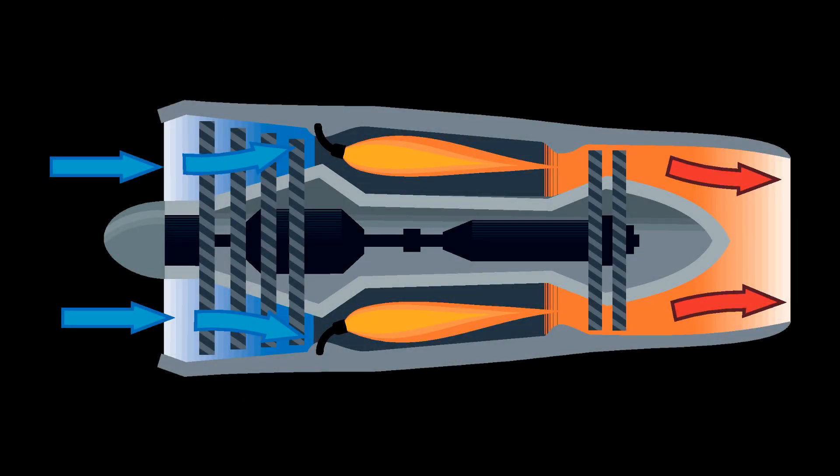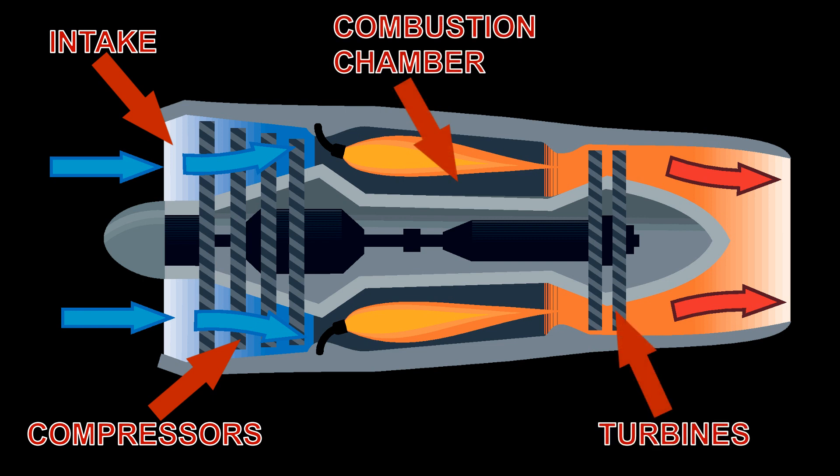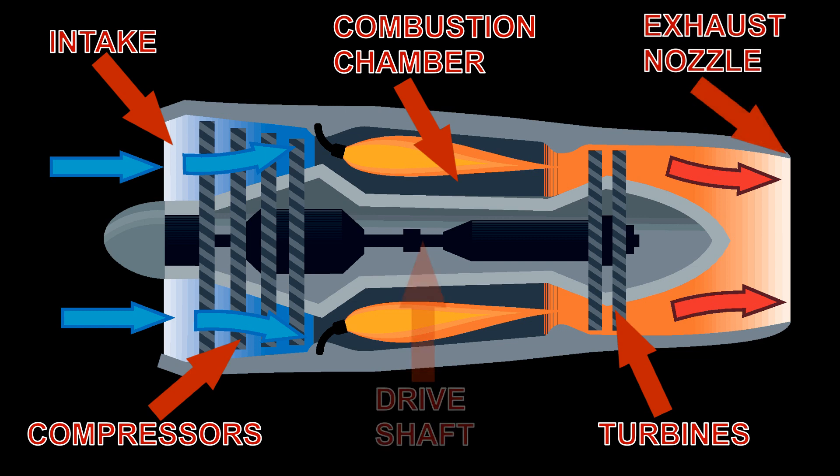Now let's look at the inside of a jet engine and describe how it works. There are various stages of a jet engine. These are the intake, the compressors, the combustion chambers, the turbines, the exhaust nozzle, and a driveshaft.